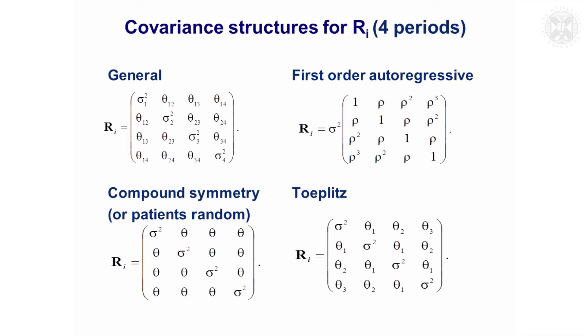One of the simplest approaches is this compound symmetry structure, and that's equivalent to fitting patient effects as random. That gives the same variance for each of the time points and a constant covariance or correlation for each pair of time points. There's an equal correlation whether you're looking at time point one and four or time point two and three, it's going to be theta regardless. So that's quite a simple structure.